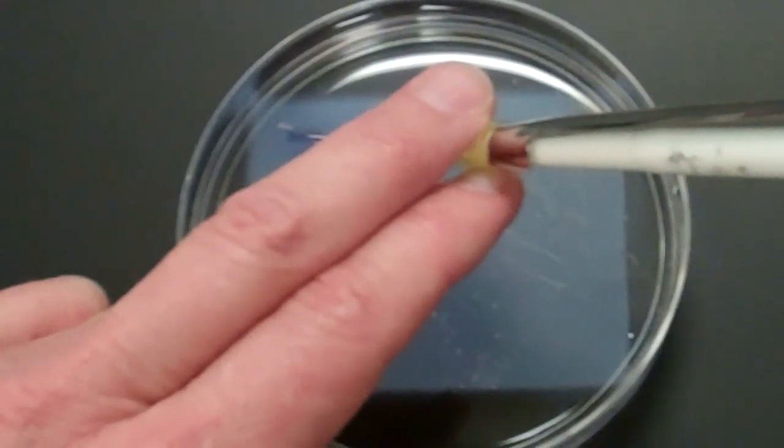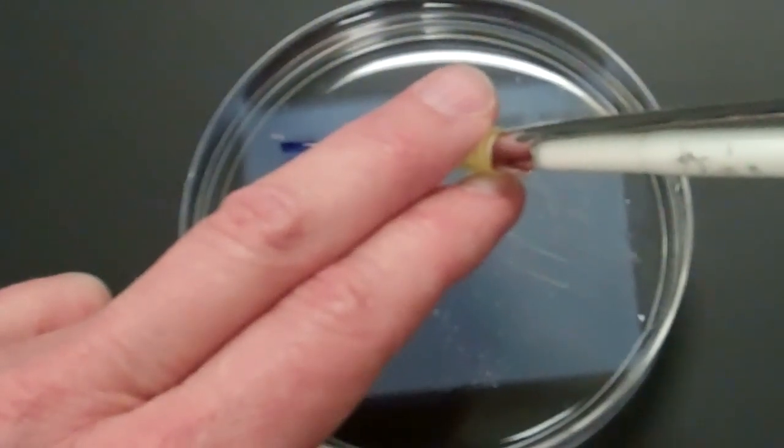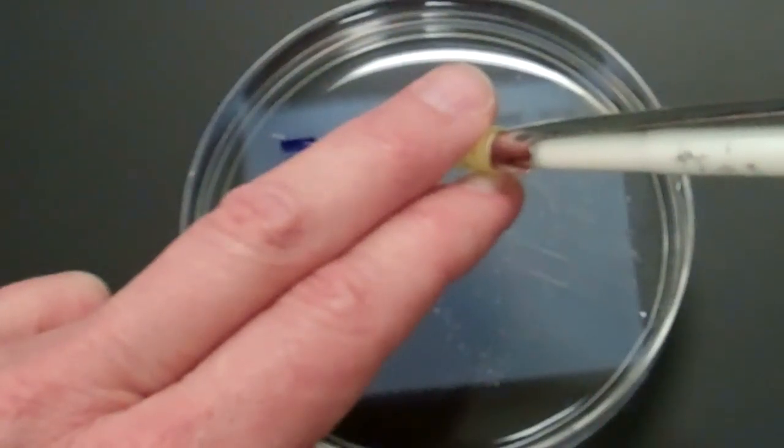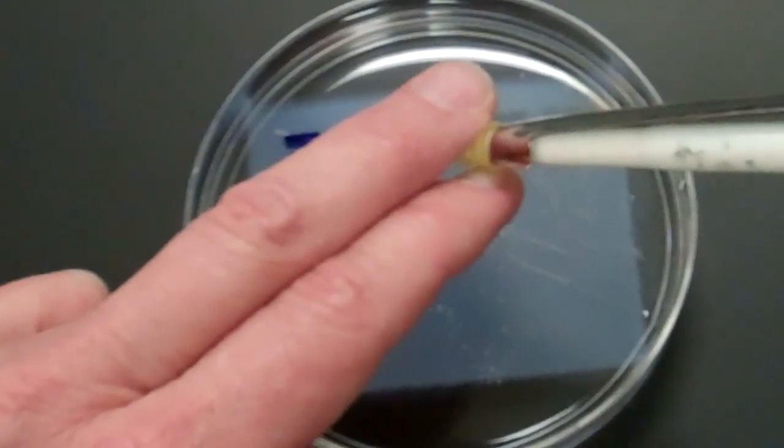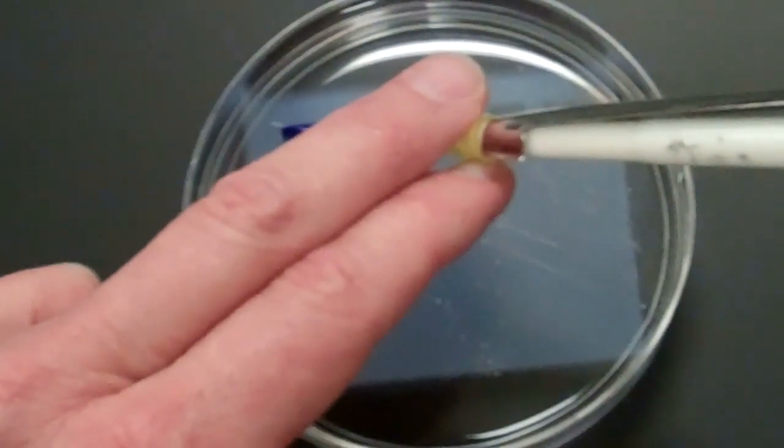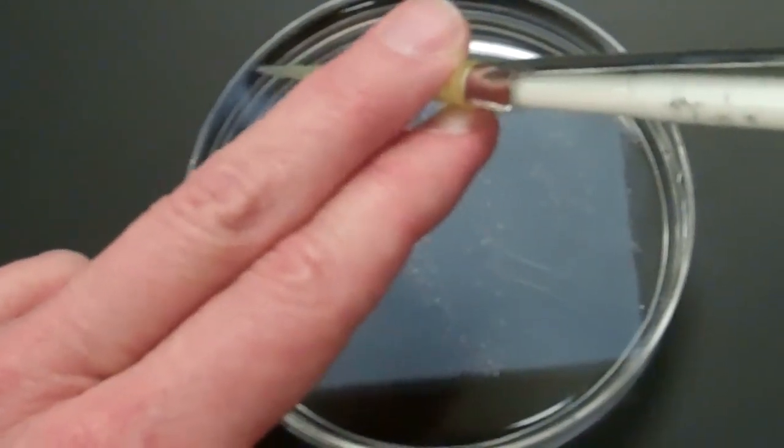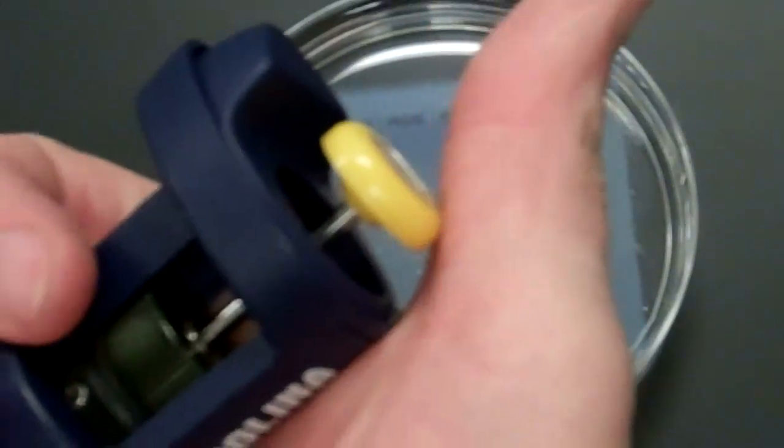So now I want to depress slowly. And the dye is filling up the well. Now my thumb is down all the way to the first stop. I want to take the tip out right now. And then I want to let go of the pressure.